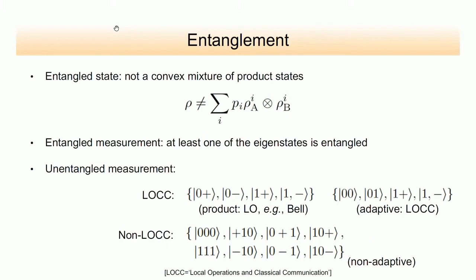First concept: entanglement. I'll call a measurement entangled when at least one of the eigenstates is entangled — I'm only thinking of pure projective measurements. When I talk about unentangled measurements, there are different types: local measurements, i.e., product measurements done in a Bell scenario without communication; adaptive LOCC-type measurements where Alice measures, sends an outcome to Bob, and Bob does some measurement accordingly; and unentangled global measurements that are non-adaptive, cannot be implemented with LOCC, but also don't require entanglement.